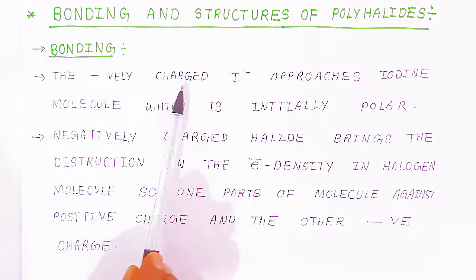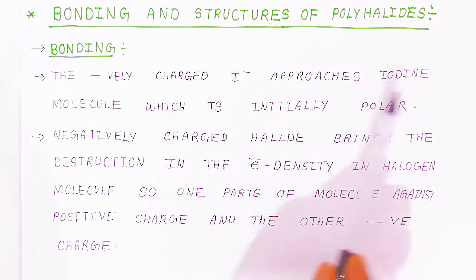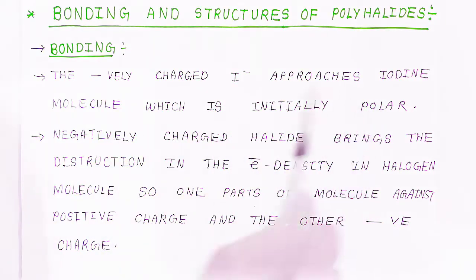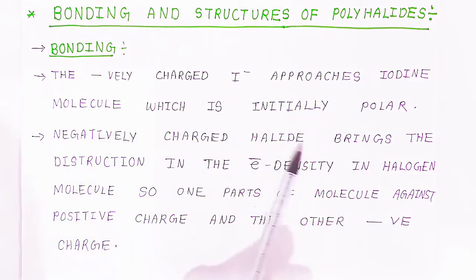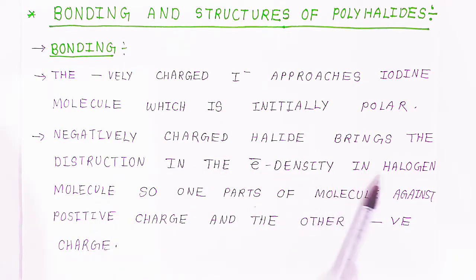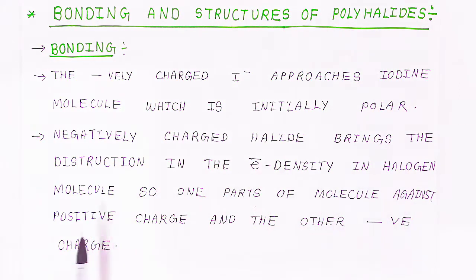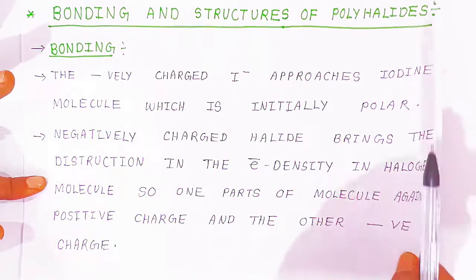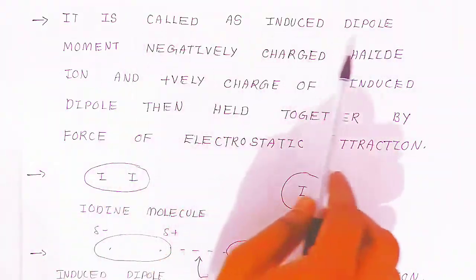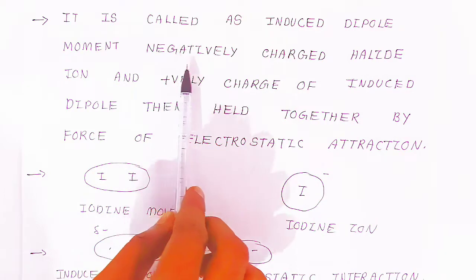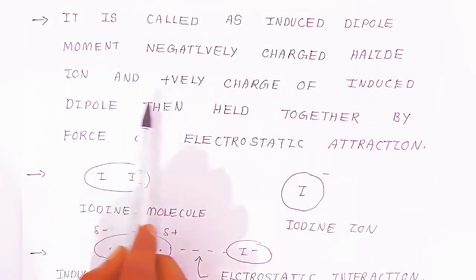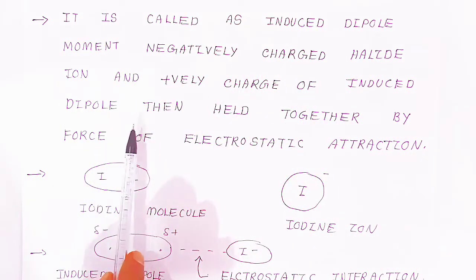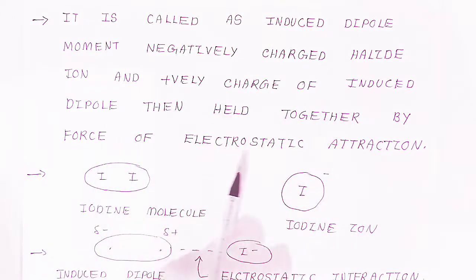The negatively charged iodide approaches an iodine molecule, which is initially nonpolar. The negatively charged halide brings distortion in the electron density in the halogen molecule, so one part of the molecule gains positive charge and another becomes negative charge. This is called induced dipole moment. The negatively charged halide ion and the positively charged induced dipole are then held together by the force of electrostatic attraction.